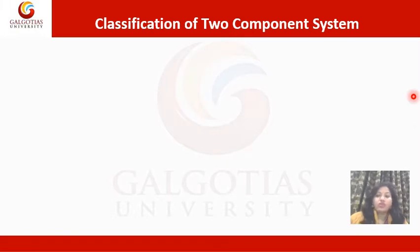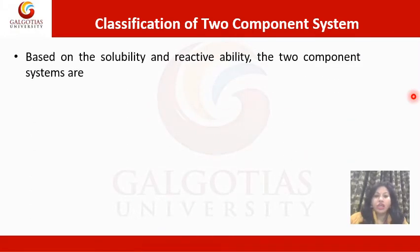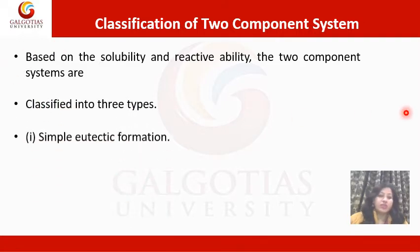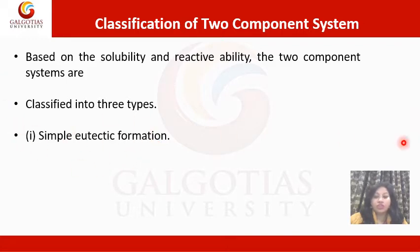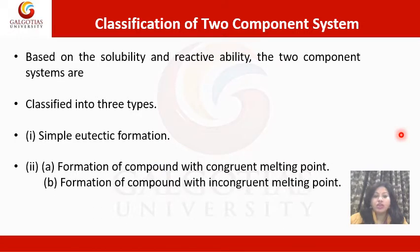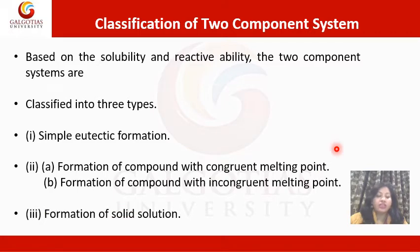Based on the solubility and reactive ability, the two component systems are classified into three types: first, simple eutectic formation; second, formation of compound with congruent melting point; third, formation of compound with incongruent melting point; and formation of solid solution.